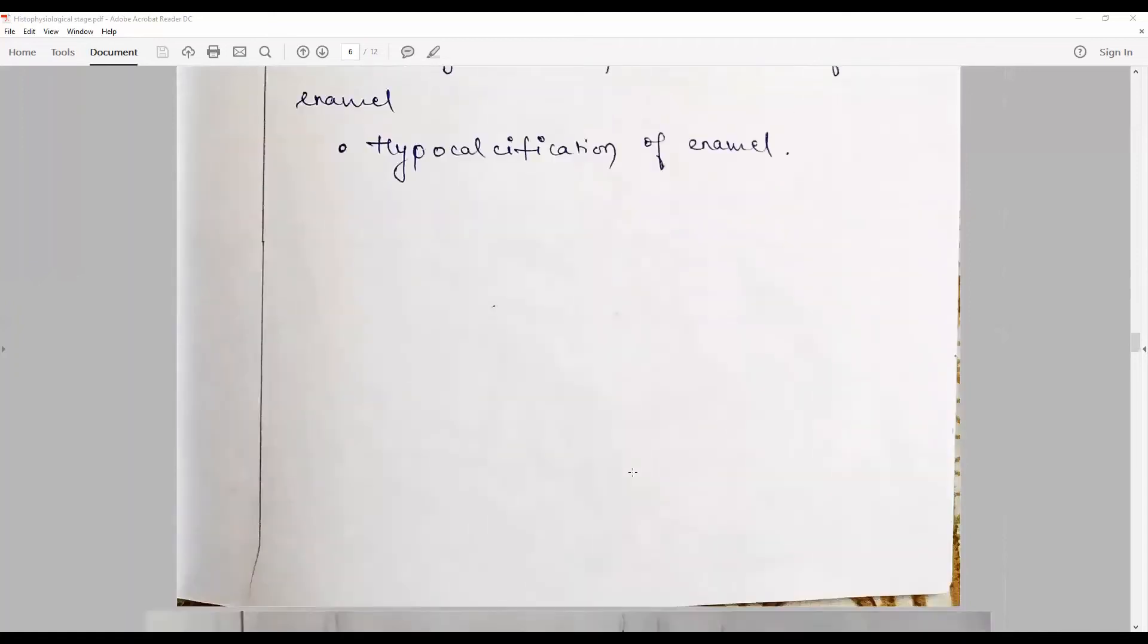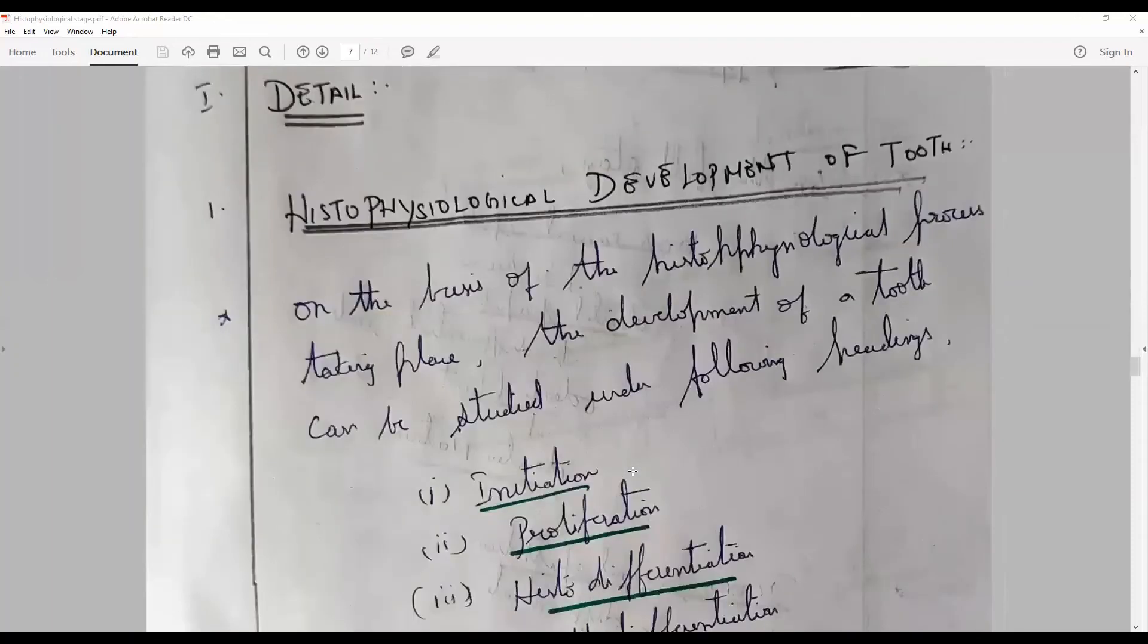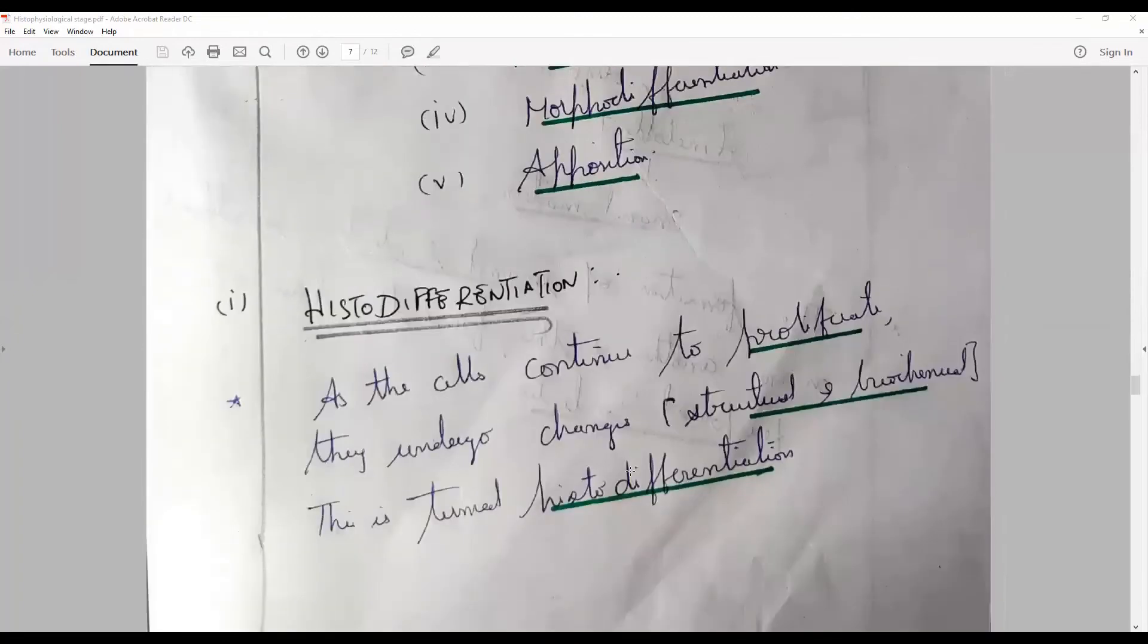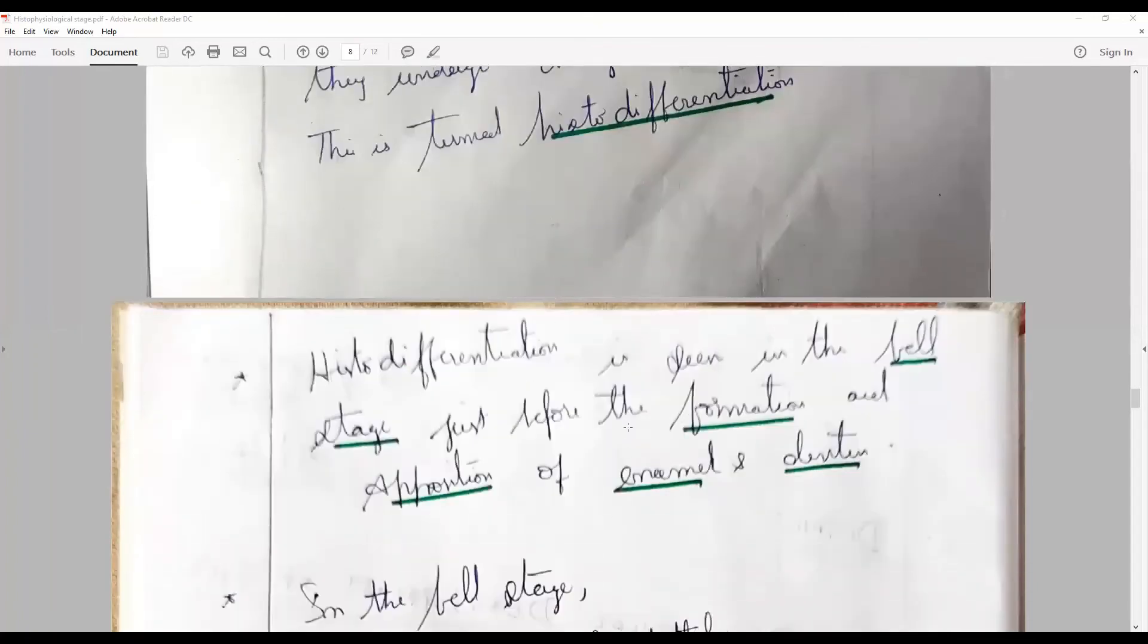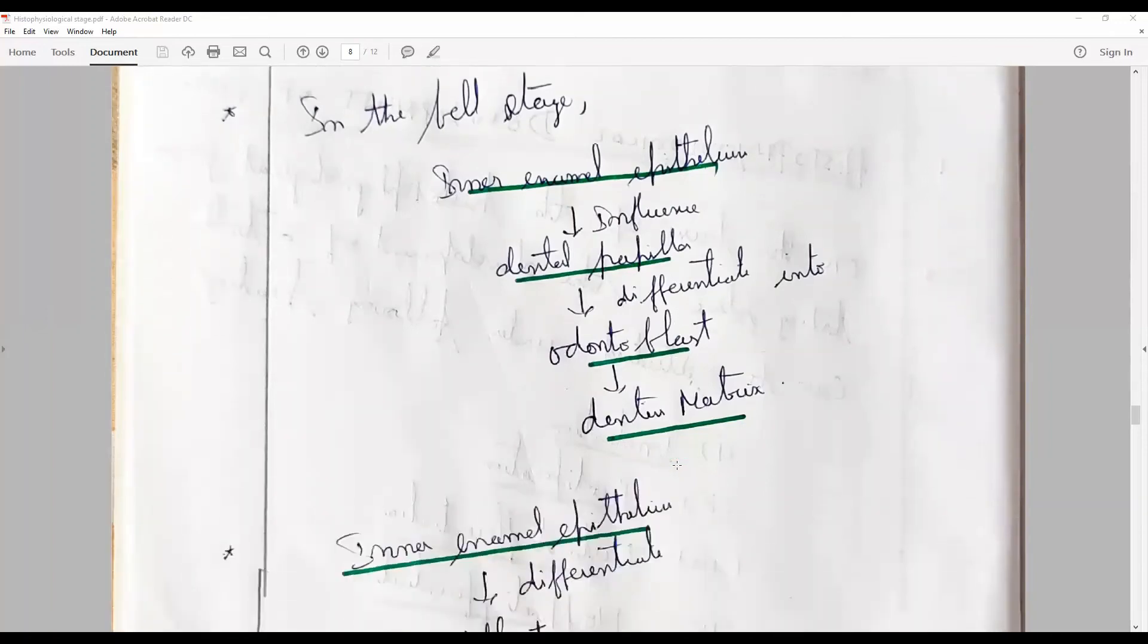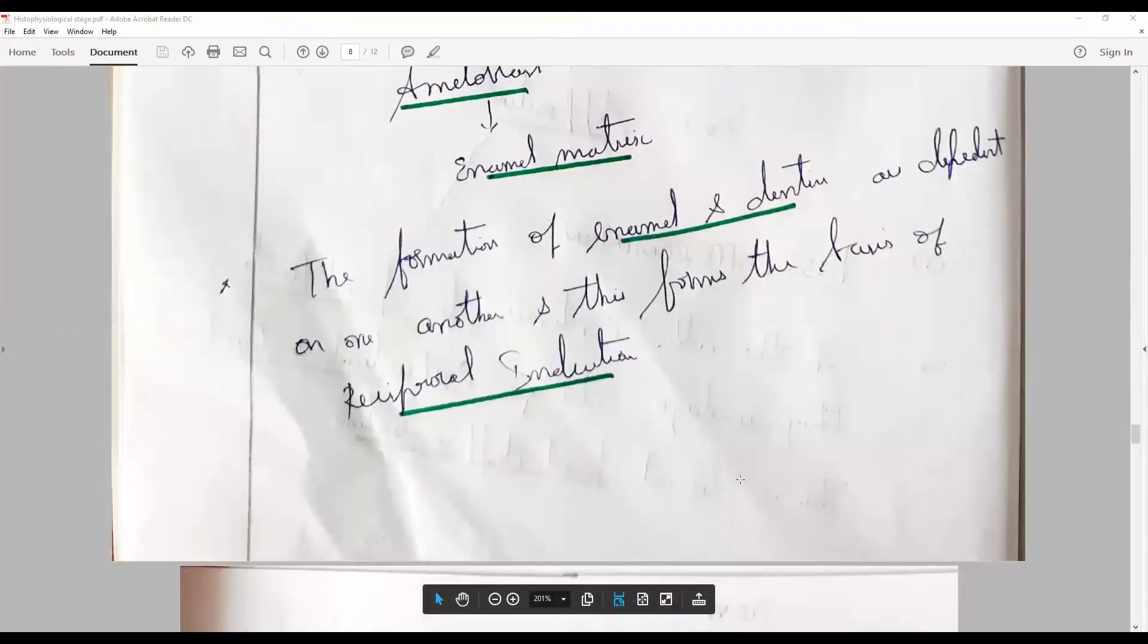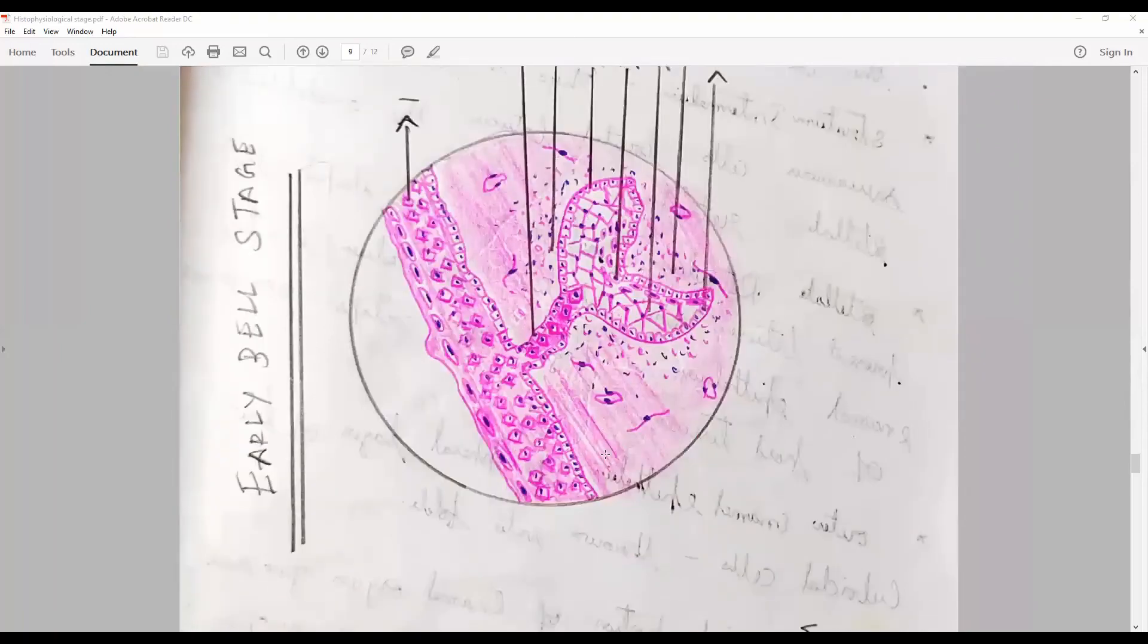Keep watching our channel to learn more about this. This is another candidate's paper where we can see how the candidate has listed out again in a similar way: continue to proliferate, undergo histo differentiation stage, becomes formation bell stage, how this differentiation inner enamel epithelium organizing influence, odontoblast dentine matrix, inner enamel matrix formation of dentine. Same stuff in a different way, but this candidate has drawn a beautiful, clearly neat diagram with proper labeling.